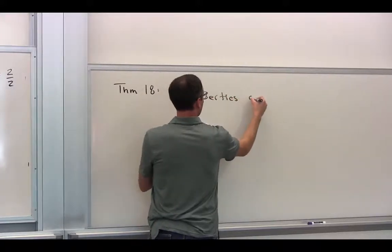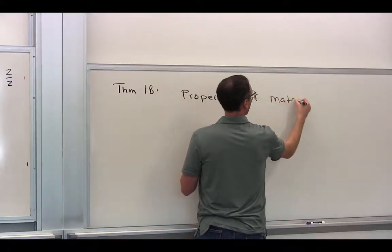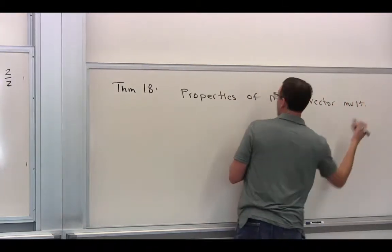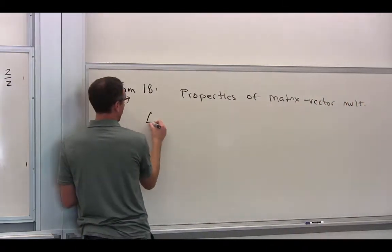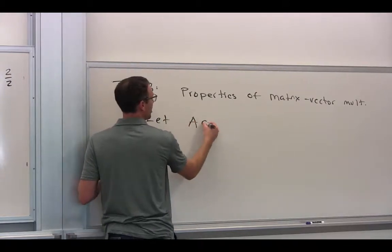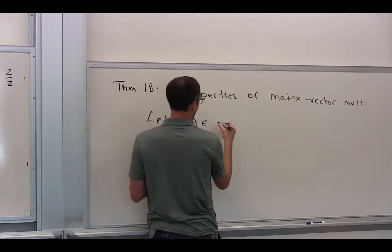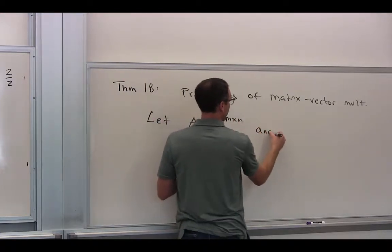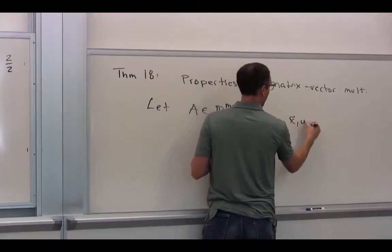The last thing we're going to do is what we call properties of matrix-vector multiplication. And there are a few properties. Can you guess what we're going to need in order to do matrix-vector multiplication?